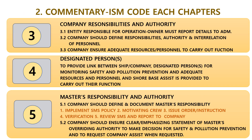Section 2: Commentary ISM code each chapter. Chapter 3: Company Responsibility and Authority. 3.1: The entity responsible for operation — the owner must report details to the administration. 3.2: The company should define responsibilities, authority, and interrelation of personnel. 3.3: The company should ensure adequate resources and personnel to carry out its functions.